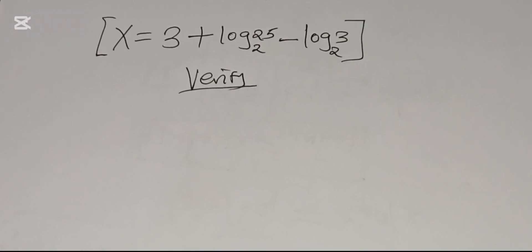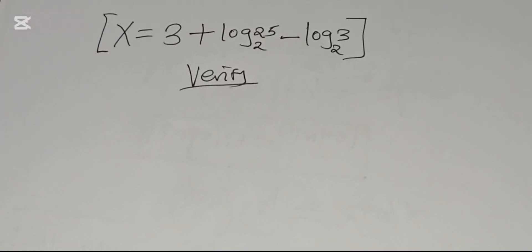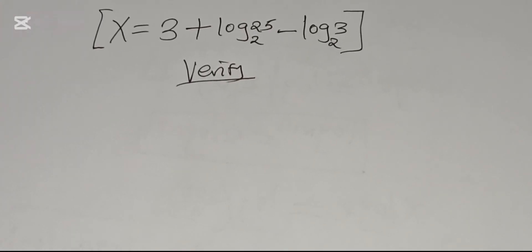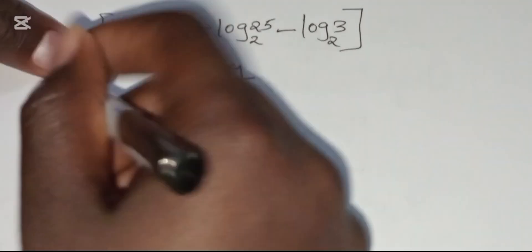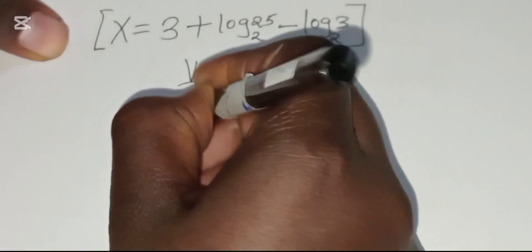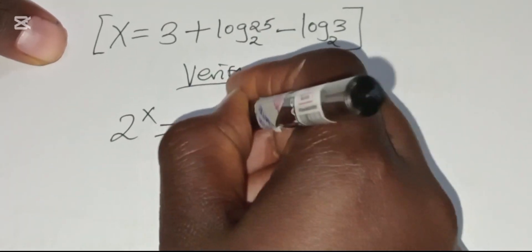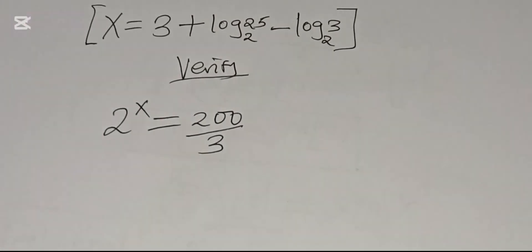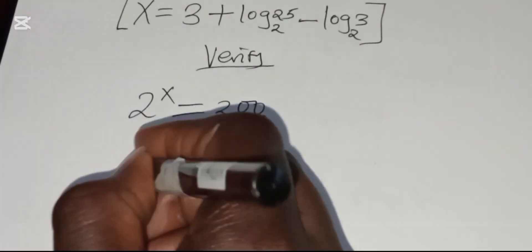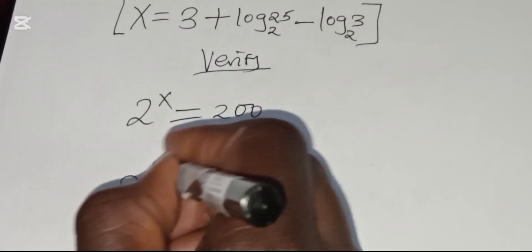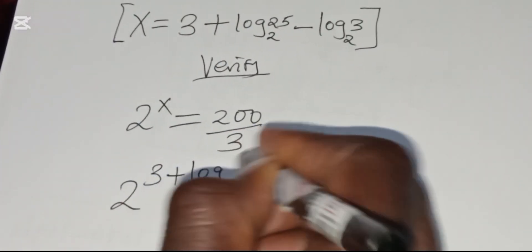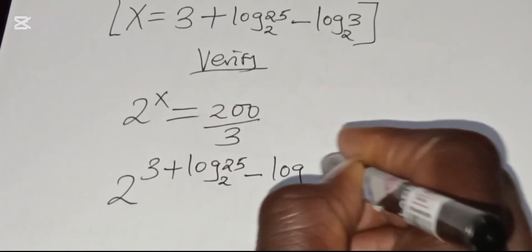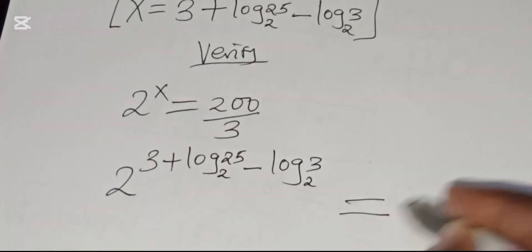Let's verify this value of x satisfies the equation. Recall that 2^x = 200/3. Substituting x = 3 + log₂(25) − log₂(3) into 2^x, we need to confirm the result equals 200/3.